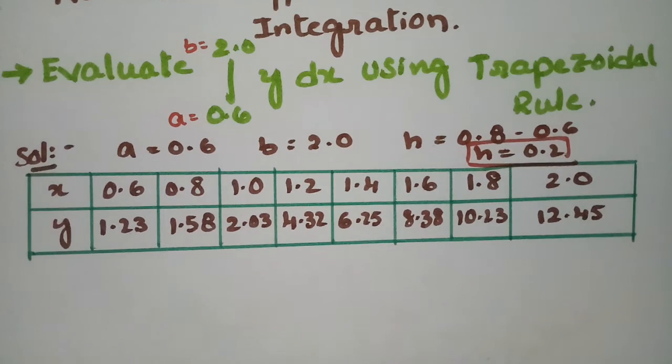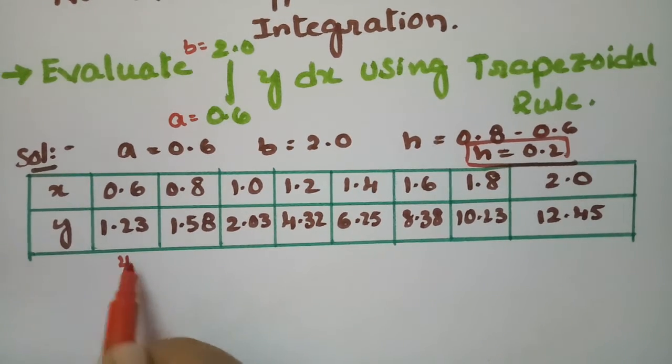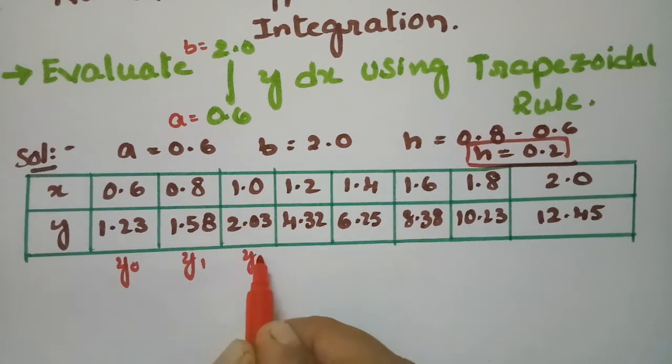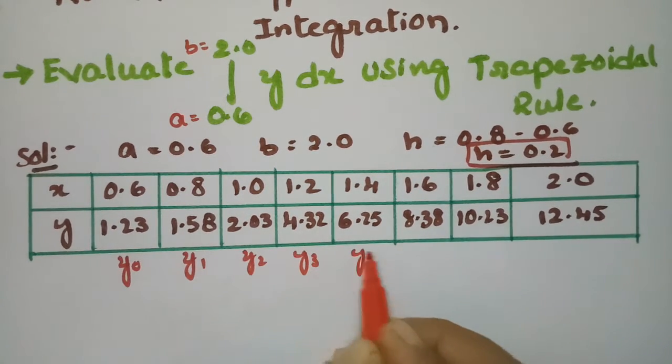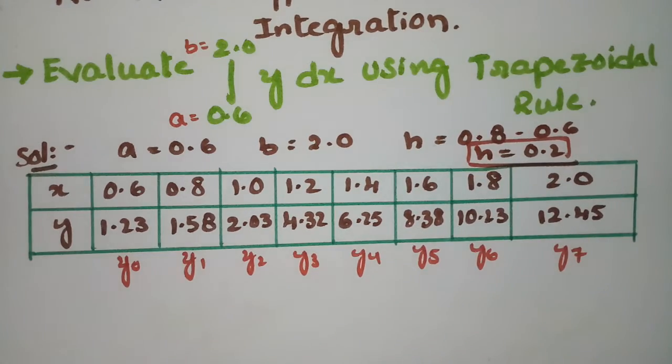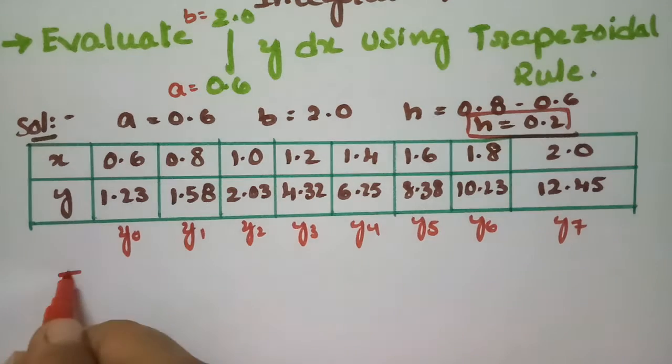After getting all these values, we have to name them. This is y0, y1, y2, y3, y4, y5, y6, and y7.